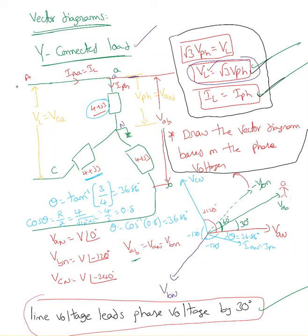The source is connected and current flows through as line current, which equals phase current — that's the second point. The third important point is that line voltage leads phase voltage by 30 degrees. Remember these three points whenever you see a Y-connected load. When it comes to power, it is the same whether the load is star or delta.